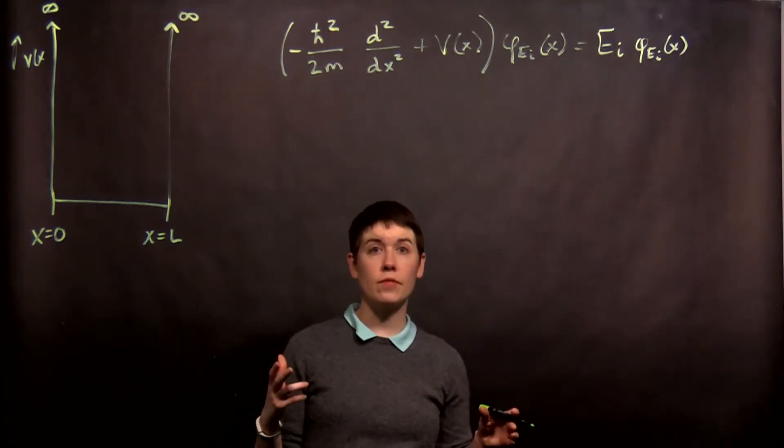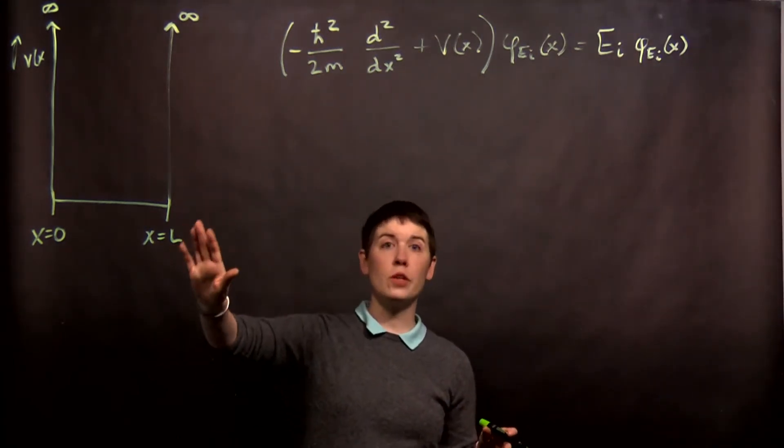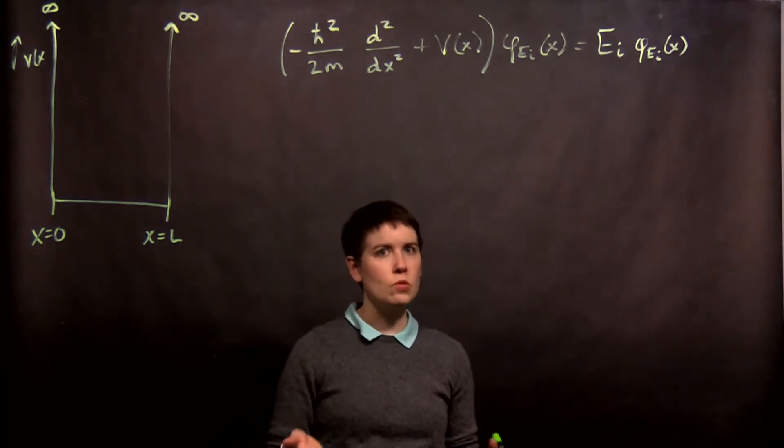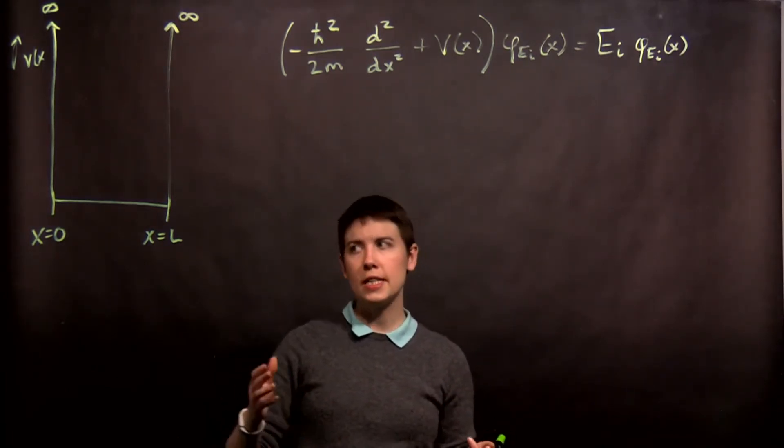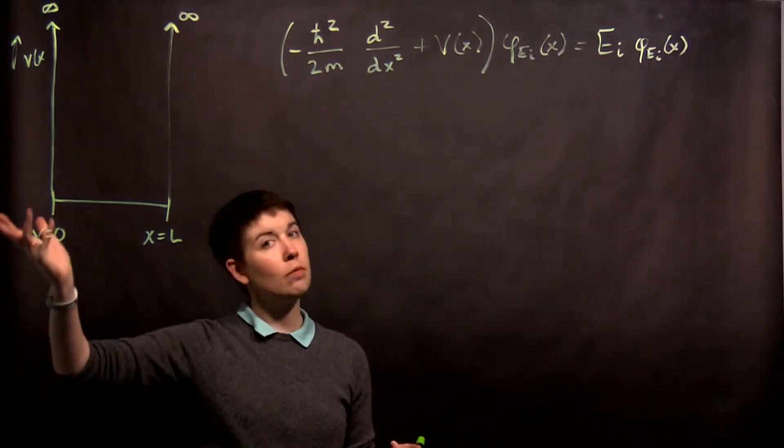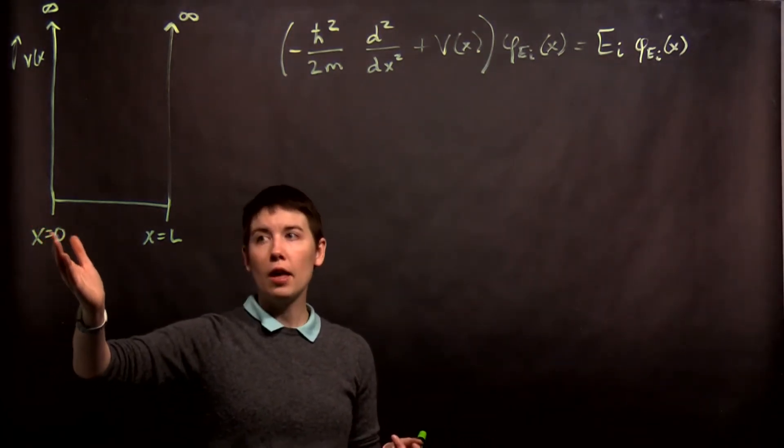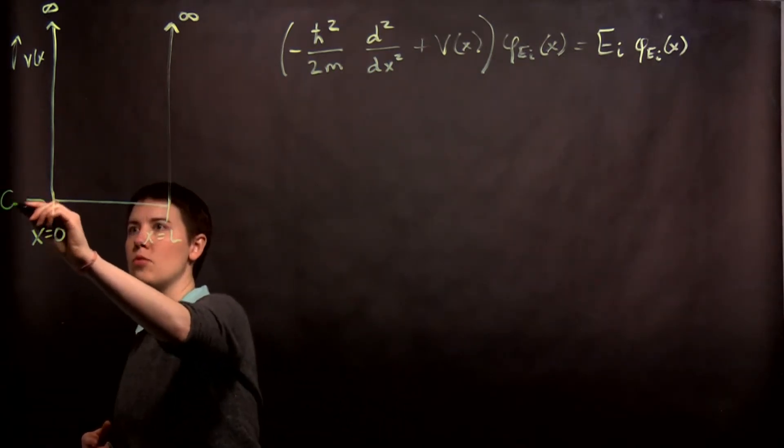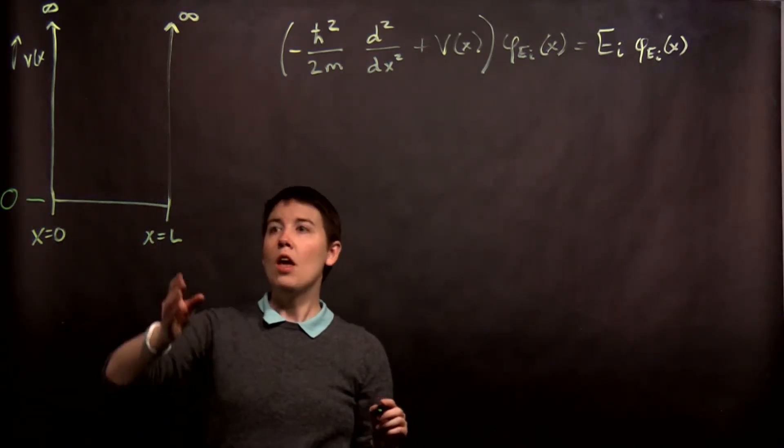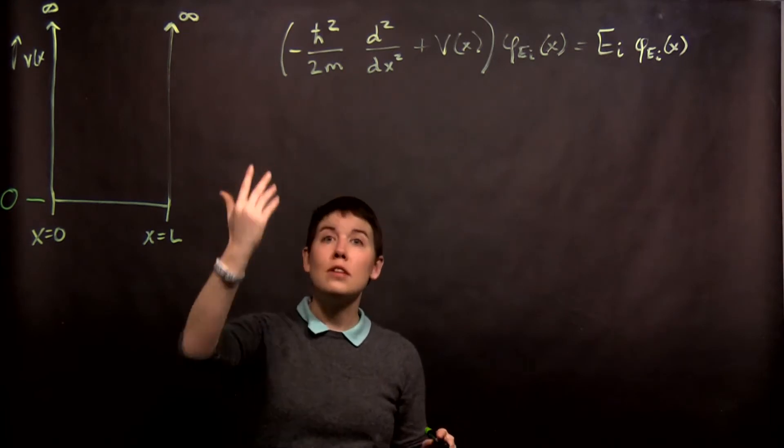Let's try to understand this energy eigenvalue equation for our infinite well. So the first step is, what's our potential? Now we have a piecewise potential. The idea is that for any x below zero, it's infinity. From x equals zero to x equals L, let's just call this V equals zero. Nice and easy. And then above x equals L, it's infinity again.